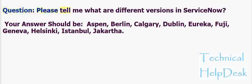Question: What are the different versions in ServiceNow? Aspen, Berlin, Calgary, Dublin, Eureka, Fuji, Geneva, Helsinki, Istanbul, Jakarta.